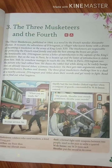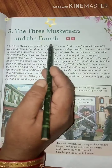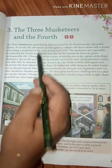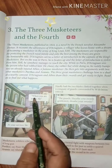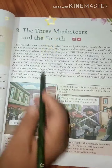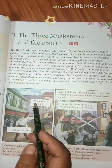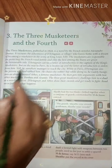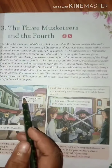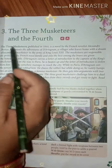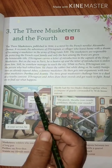Let us begin with the chapter 'The Three Musketeers and the Fourth.' Before we start, let me tell you something about the author who has written this story. This story has been brought from a novel called 'The Three Musketeers' by the French novelist Alexandre Dumas.